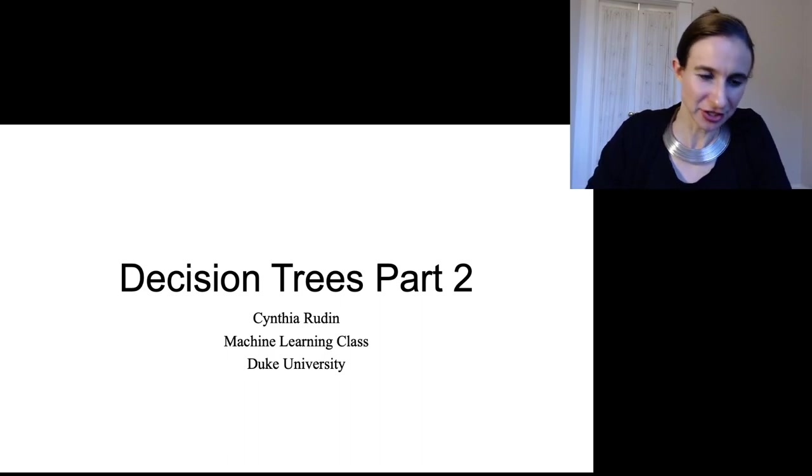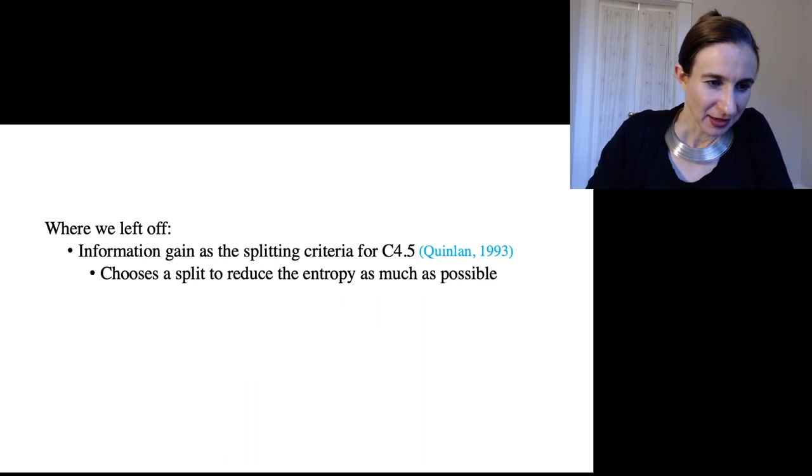This is the second lecture on decision trees. Where we left off last time was talking about information gain, which is the splitting criteria for C4.5, which tries to choose a split to reduce entropy.